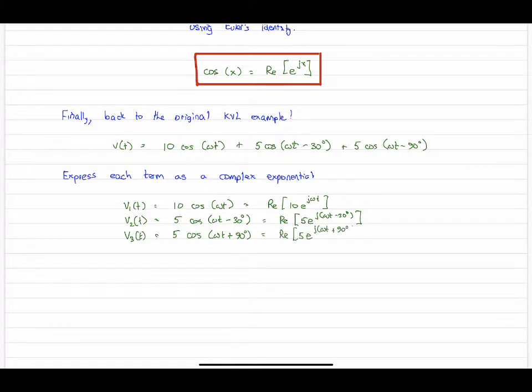Now we have these all expressed in terms of complex exponentials. Let's see how this works, let's see why this is easier. Let's now rewrite our addition of the three sinusoids as the addition of these three complex exponentials. That's all we're doing in this part right here.